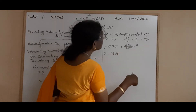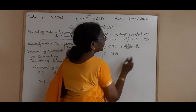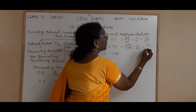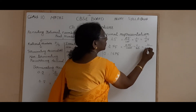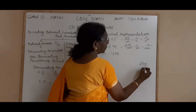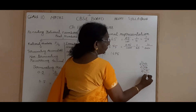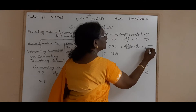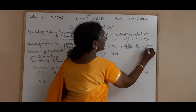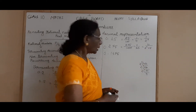So for 0.125: the numerator is 125 by 1000. When you simplify — 125 goes 1 time into 125 — you get 1 by 8. And 8 you can write as 2 into 2 into 2, that is 2 cubed. So you can write the denominator as 2 cubed into 5 to the power 0.